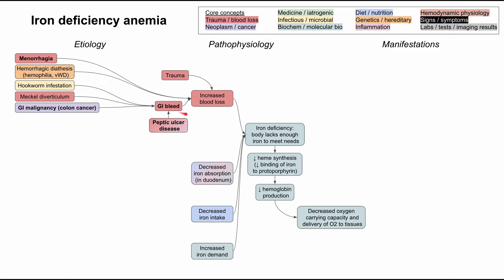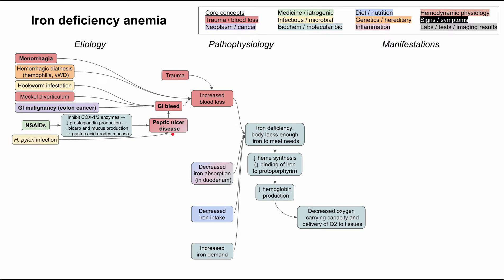Another cause of GI bleeding, typically in younger patients, is peptic ulcer disease. NSAIDs like ibuprofen or naproxen cause ulcers by inhibiting COX-1 and COX-2 enzymes, which decreases prostaglandin production, leading to decreased bicarbonate and mucus in the stomach. Without that protection, gastric acid erodes the mucosa, forming peptic ulcers that bleed. H. pylori infection is the other major cause of peptic ulcer disease, and it can also lead to decreased iron absorption.